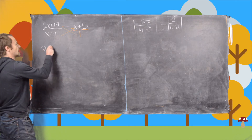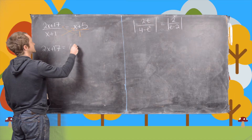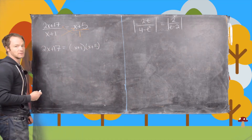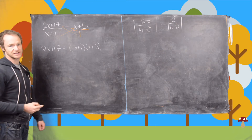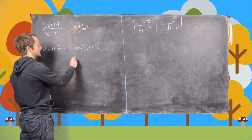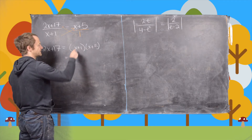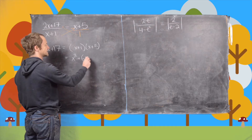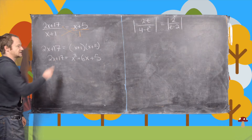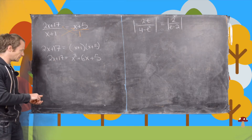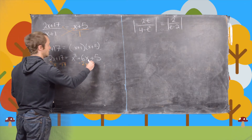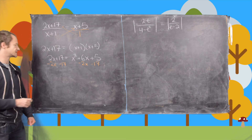Cross multiplying gives us 2x + 17 = (x + 1)(x + 5), because we just multiplied the orange one up, which doesn't change anything. Next we're going to FOIL out the right-hand side, giving us x² + x + 5x, so that's + 6x + 5, and that equals 2x + 17 on the left-hand side. Now we're going to move the 2x and the 17 from the left-hand side to the right-hand side.